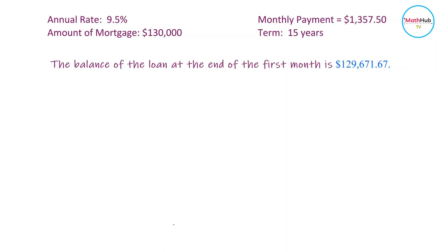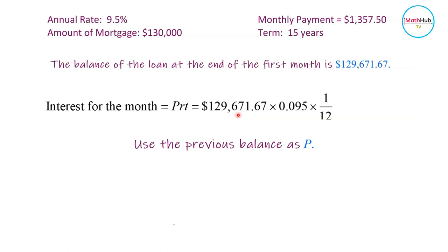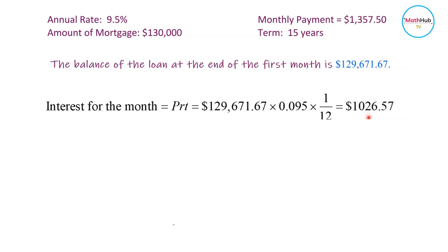For the second row, we start with a loan balance of $129,671.67 and repeat these computations for the second month. To compute the interest for the second month, use the simple interest formula with the new loan balance: $129,671.67 times the interest rate 0.095 times 1/12, which equals $1,026.57.